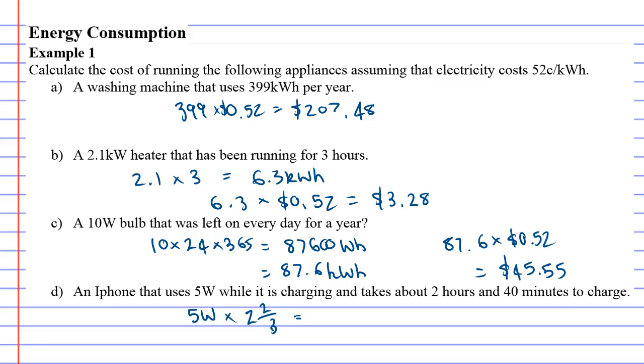I'm just going to do this in my calculator: 2 plus 2 thirds equals, and it came out and gave me 13.3 continuous watts. So it's a 3 that goes on forever, put the little dot there.